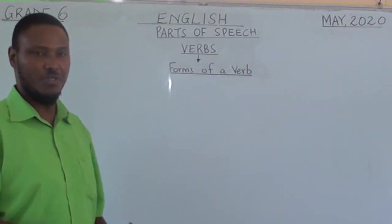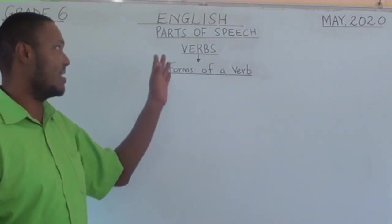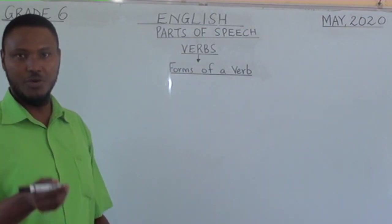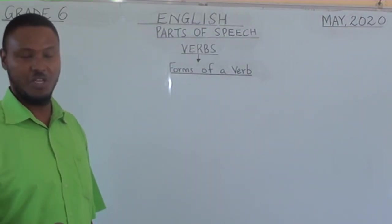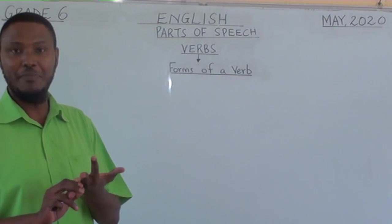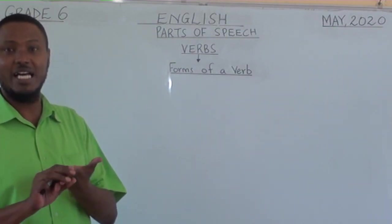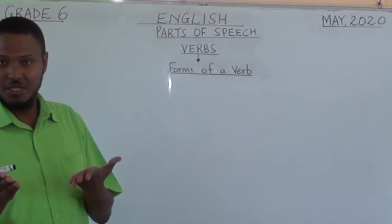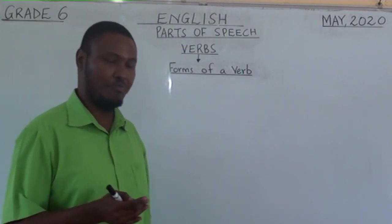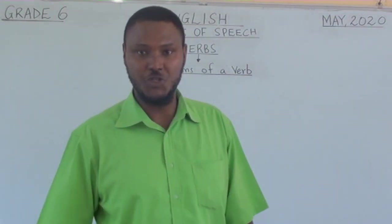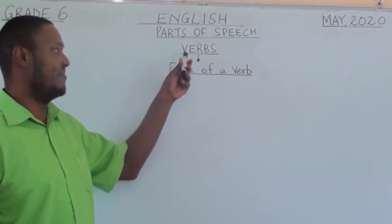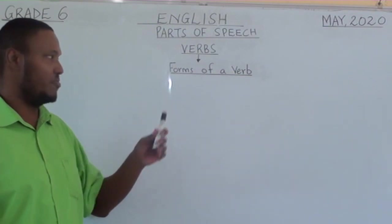In the previous lessons in class, we have started looking at the parts of speech. And you can tell me what these parts of speech are — there are eight. We have conjunctions, prepositions, interjections, adjectives, verbs, nouns, and pronouns. These are the parts of speech that we've looked at in class.